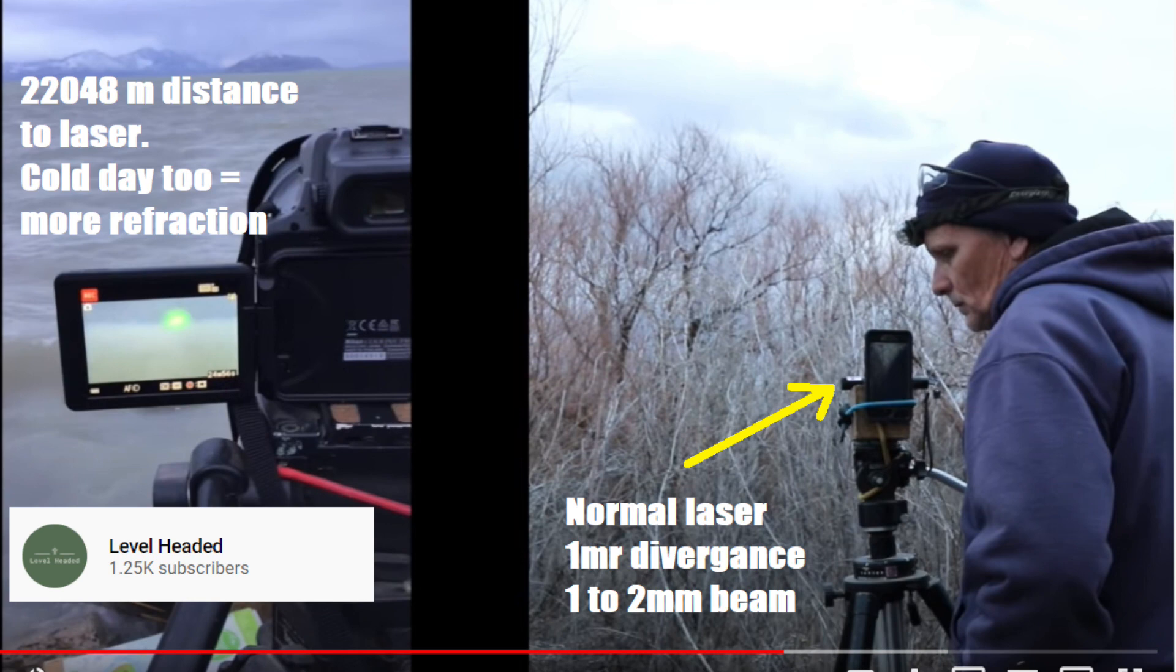Basically, he has a normal laser that you can buy anywhere, and it costs anywhere from like $9 to maybe $25. It's a normal laser that has a one milliradian divergence and the aperture is one to two millimeters. Now, keep in mind the numbers in regards to the laser, the divergence, and also the beam aperture. Also, the distance across the lake is 22,048 meters or about 13.7 miles.